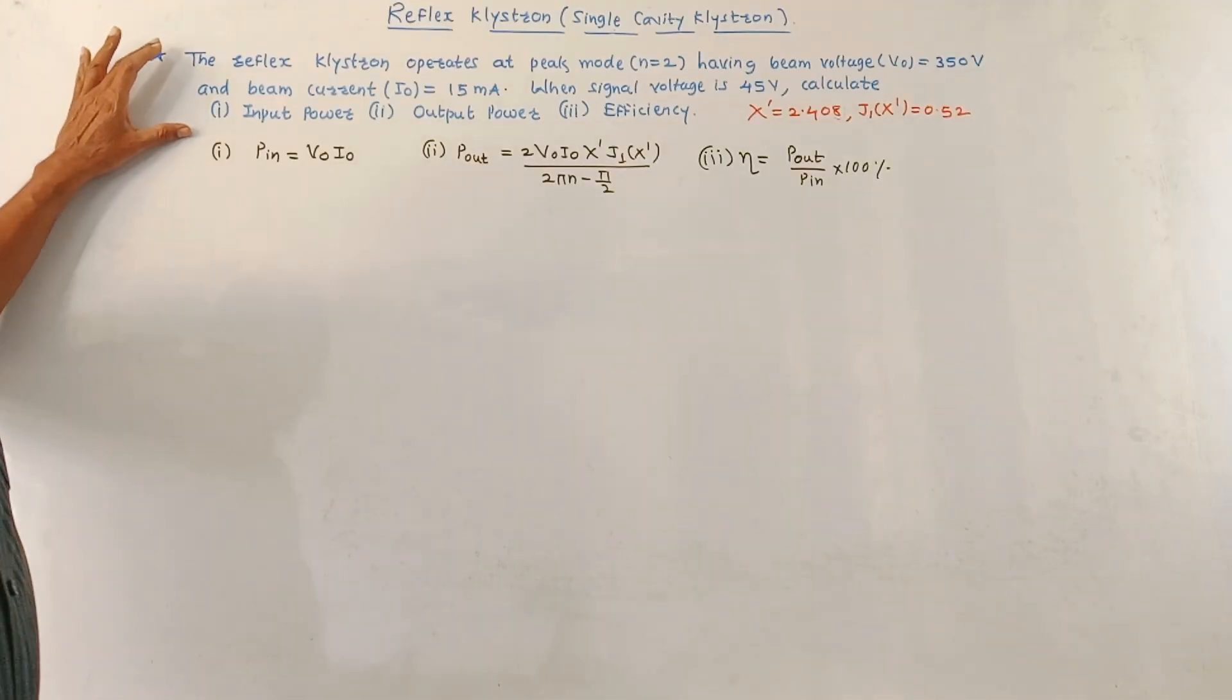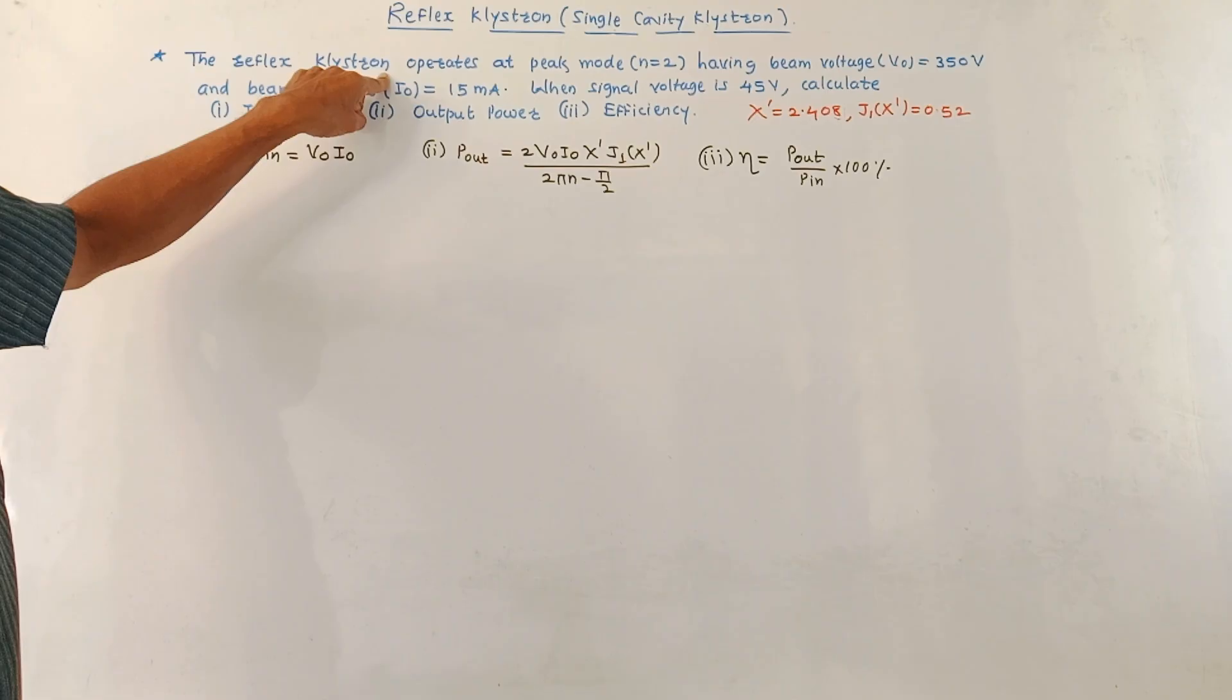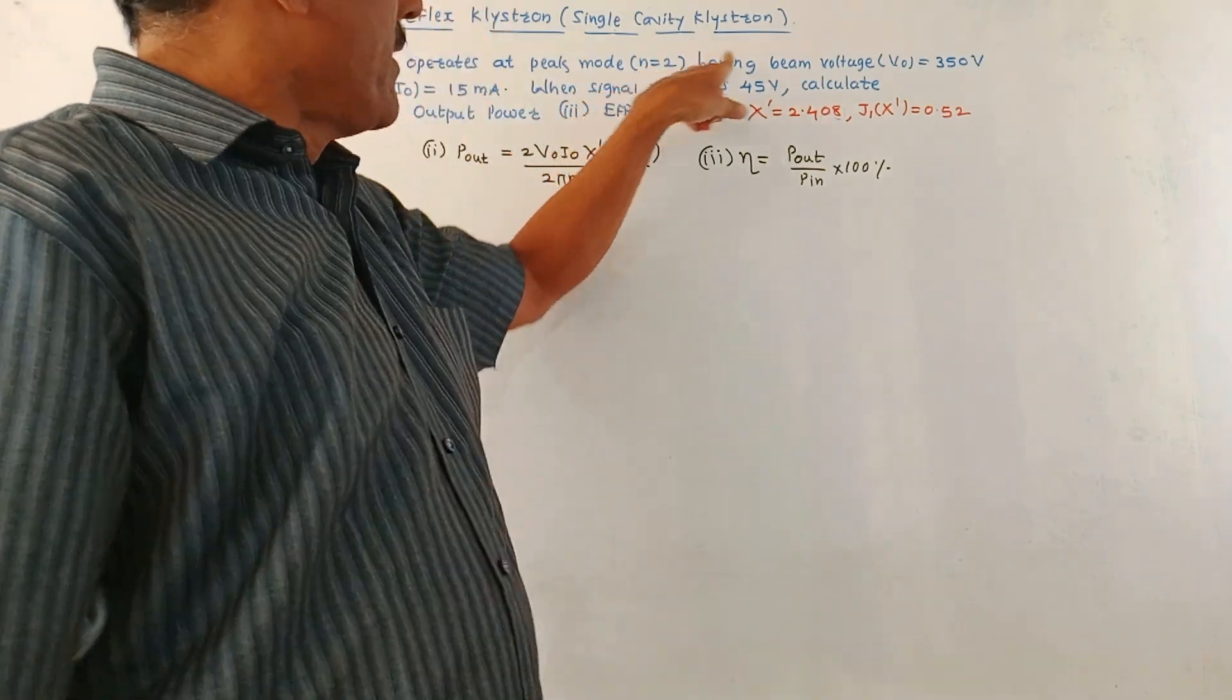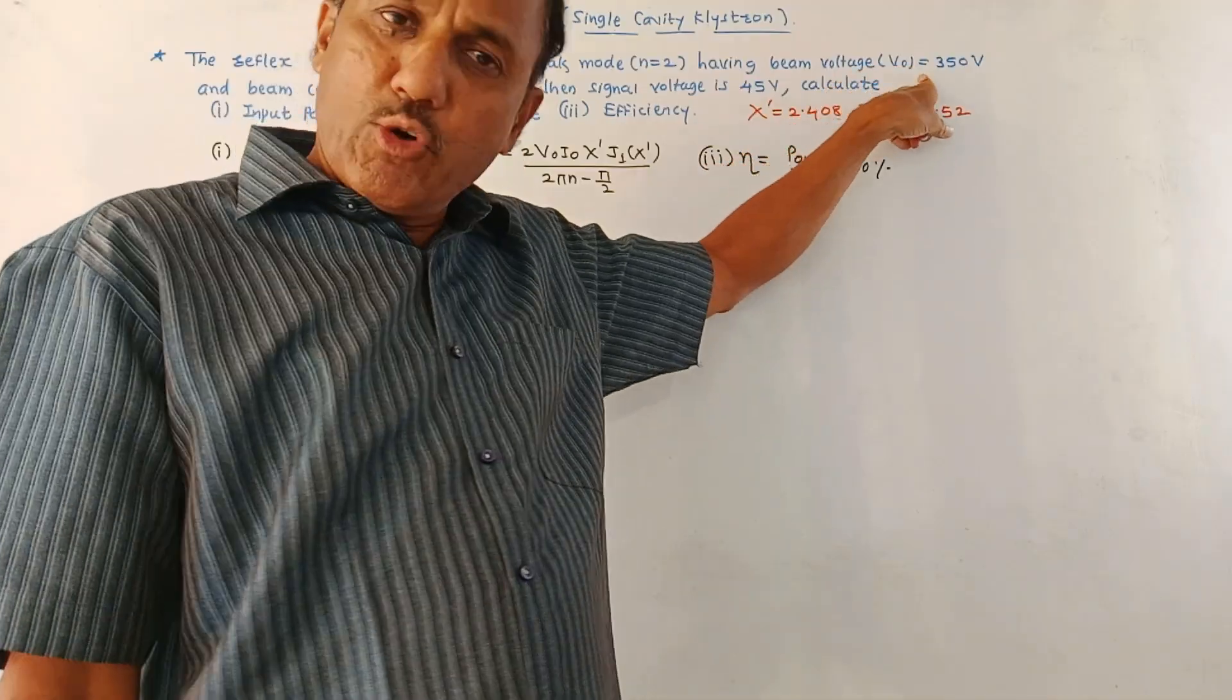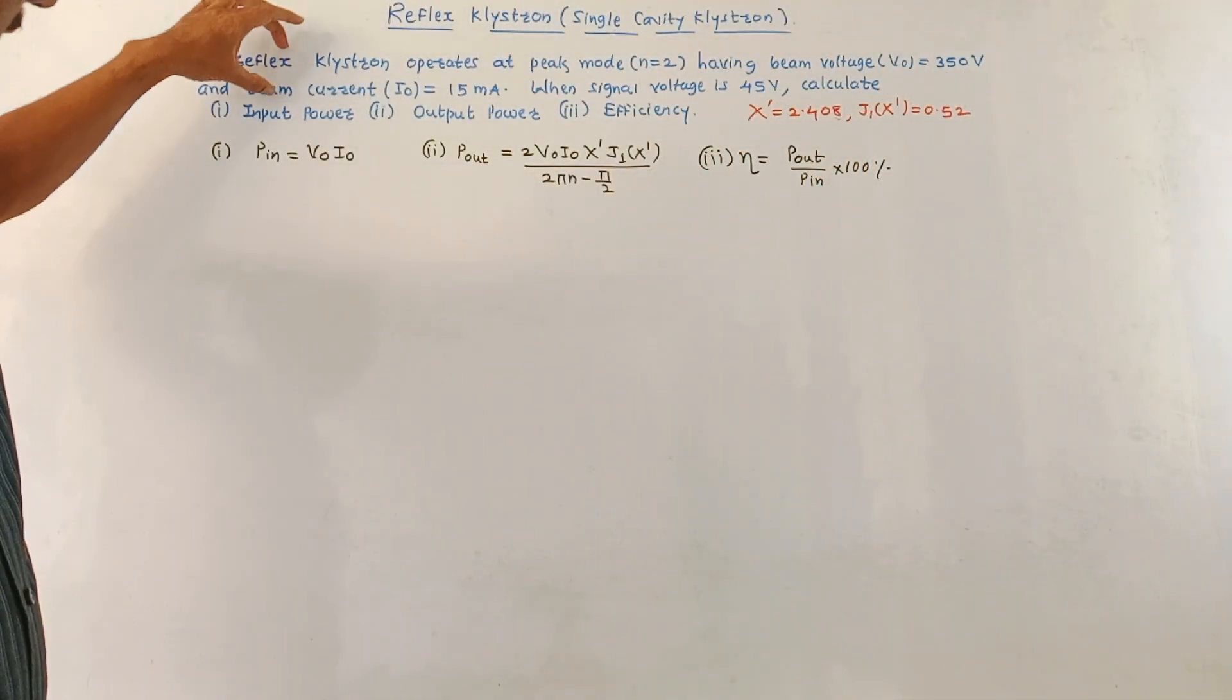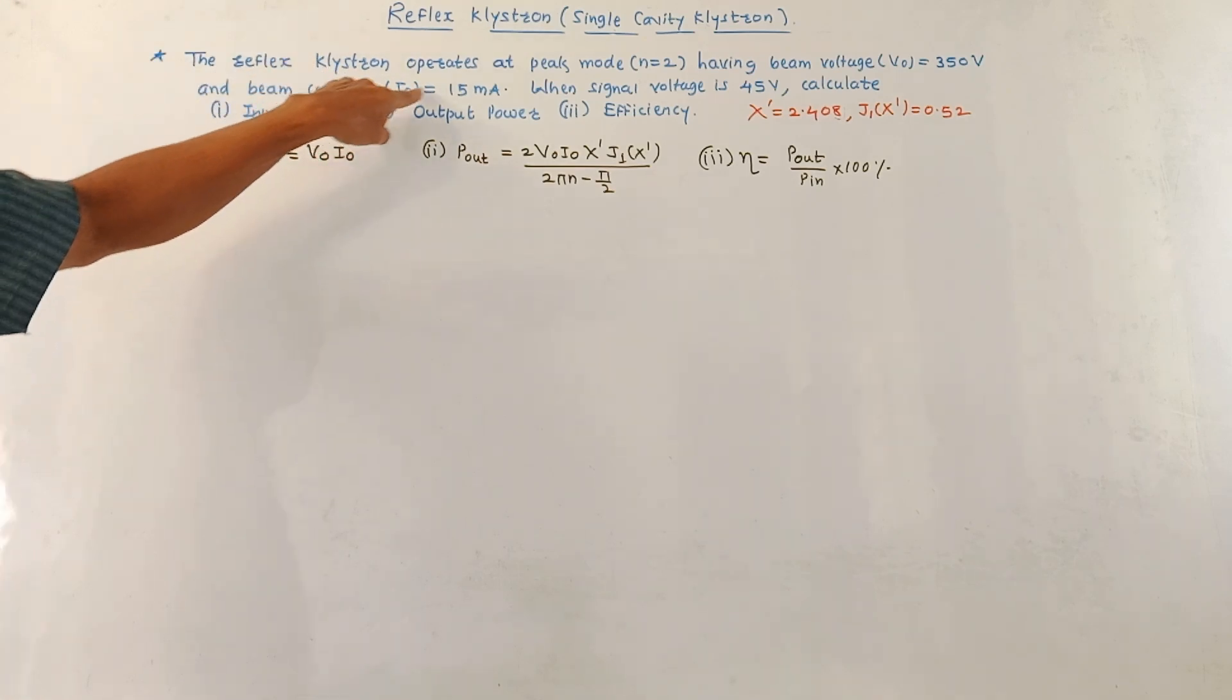Now, let us solve one numerical based on this reflex klystron. Given question: the reflex klystron operates at peak mode, that is n equals to 2. Having beam voltage V0 which is 350 volt and beam current I0 which is 15 milliampere.